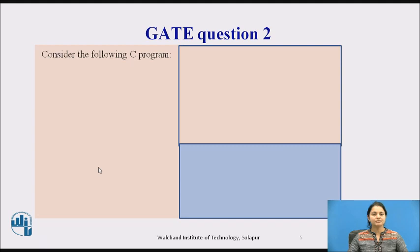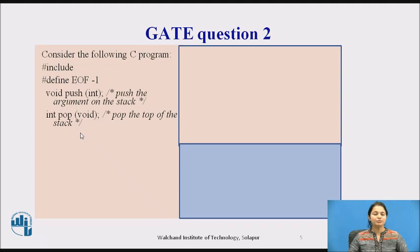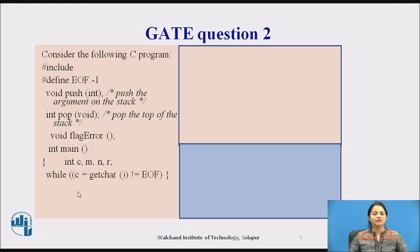We will go to the next question. Here, consider the following C program. In it, end of file is defined as -1. We need to read the program up to the end of file. One function is given — void push — which will push the argument onto the stack. Then pop, where the top of the stack can be popped. Next there is an error flag. If the current character C is a digit, we push it.